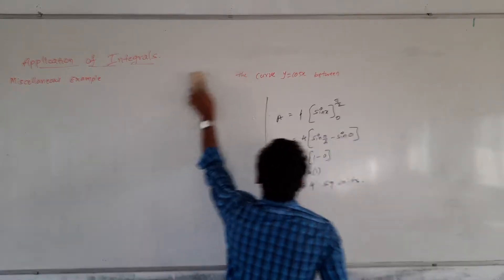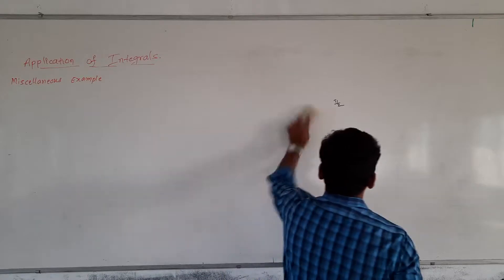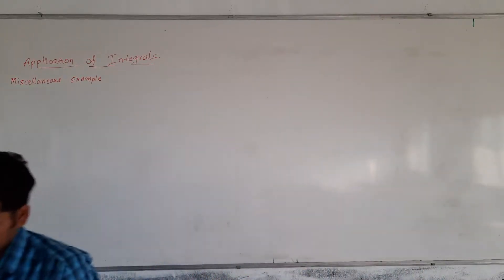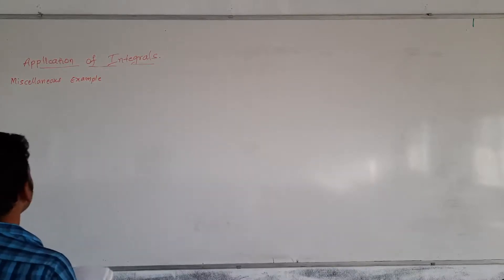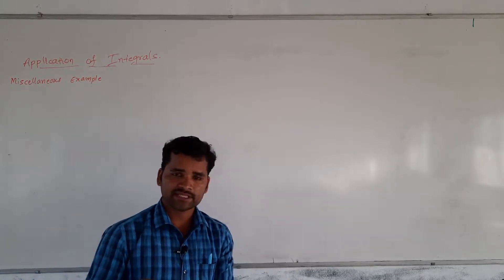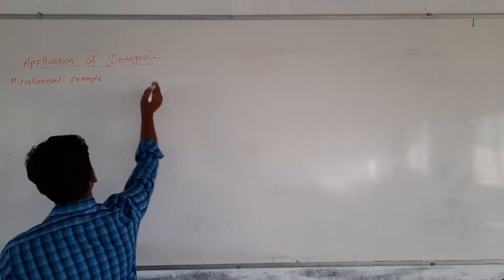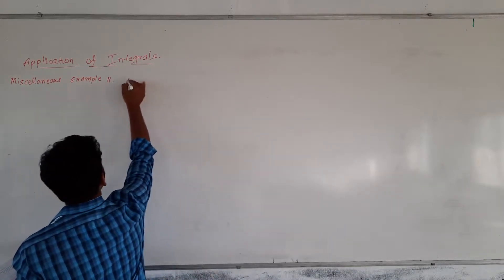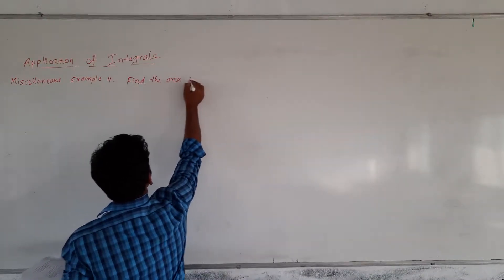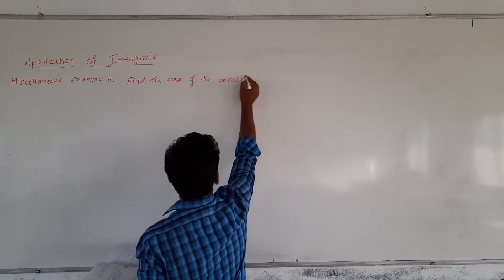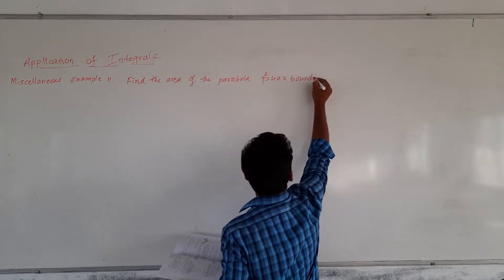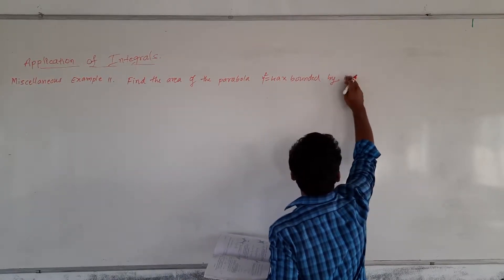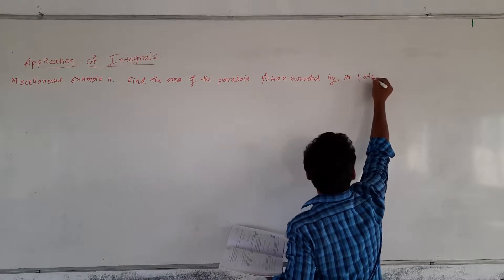Let me take one more from the miscellaneous part — miscellaneous example 11. That is: find the area of the parabola y² = 4ax bounded by its latus rectum.